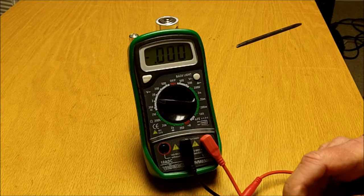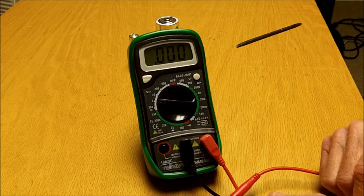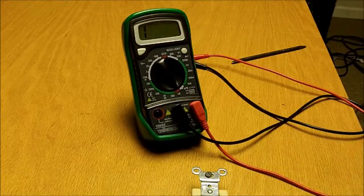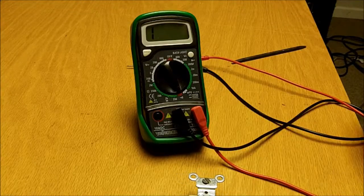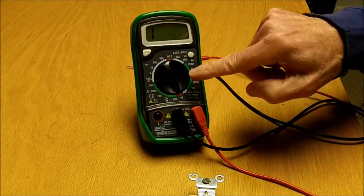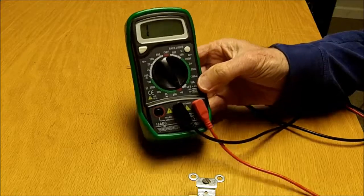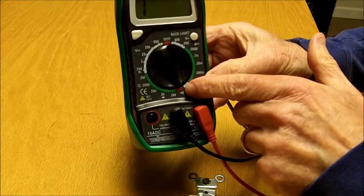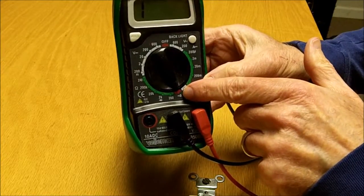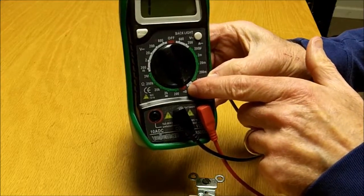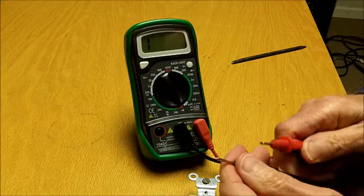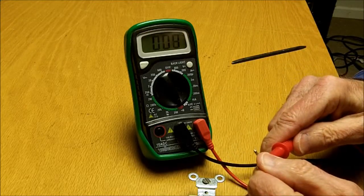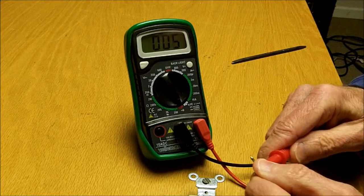Another practical application is to check a switch. To do that we're going to be measuring continuity, so I'm going to set the meter on the continuity setting here, which is indicated by some little sound waves coming away from a point. The way this works is when you touch the leads together you hear a tone.